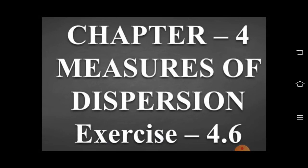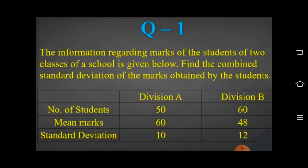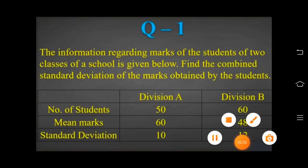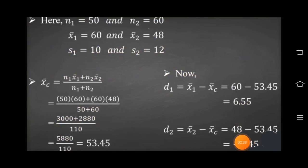Now Exercise 4.6, Sum number 1. The information regarding marks of the students of two classes of a school is given. Find the combined standard deviation of marks obtained by the students. First, we have to find out the combined mean for calculating combined standard deviation.